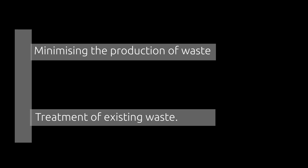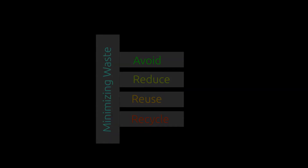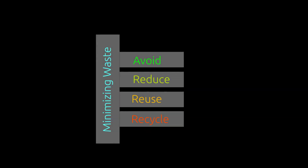In this video, we will discuss 4 methods by which we can minimize the production of waste material: 1. Avoid, 2. Reduce, 3. Reuse, 4. Recycle.